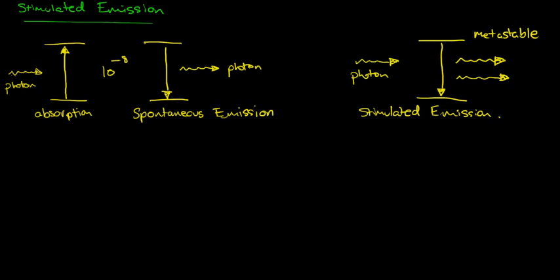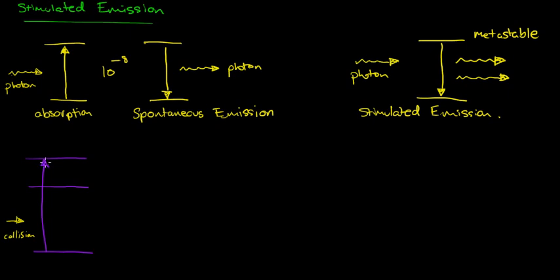We were talking about neon, and we had an energy level diagram of neon before. I'll draw it a little bit bigger this time. We have a collision — this first transition is a collision from the helium atom, which is why the helium is there in the first place. We can get that neon to this metastable state. So this is our neon. This is a metastable state here, and it's a relatively long-lived state for a reason — I'll get to that in a second.